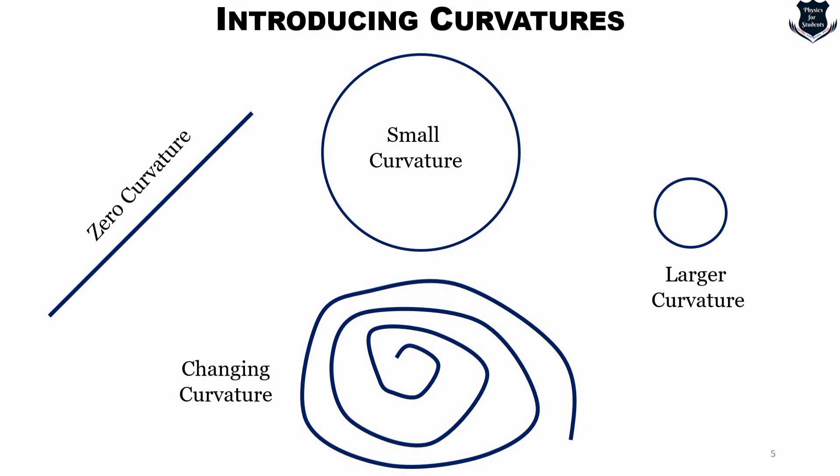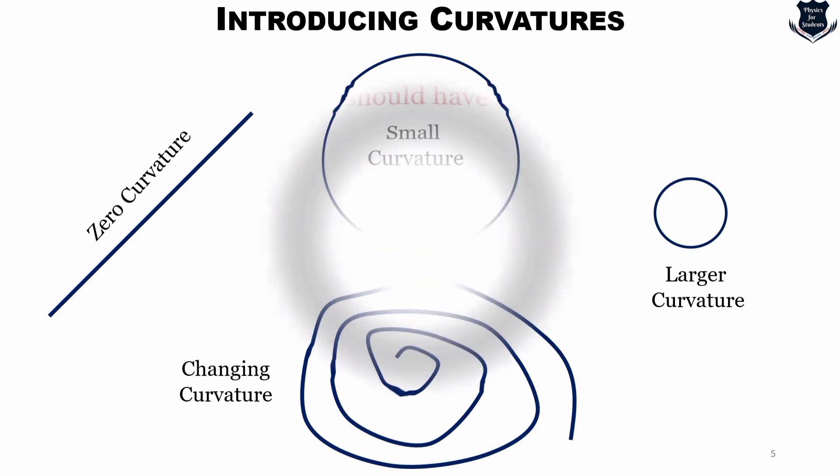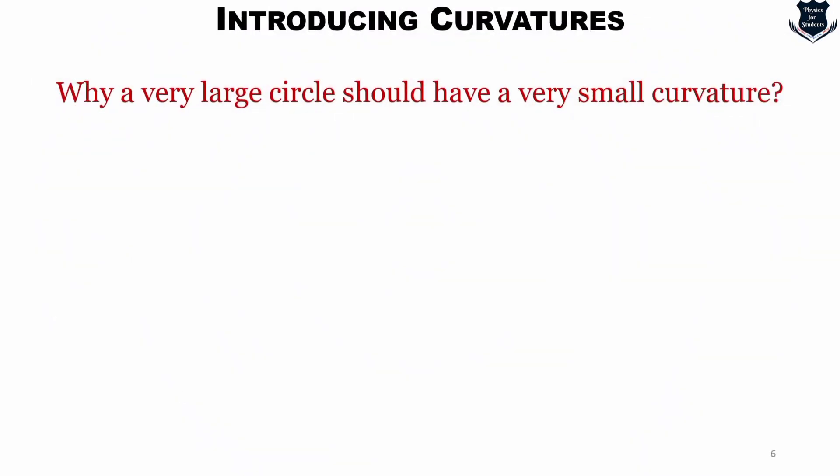So the rough idea is as follows. You can imagine a curve as a roller coaster along which you travel at a constant speed. The curvature should equal the force you feel necessary to keep traveling along the curve. So now let us explain why a very large circle should have a small curvature.